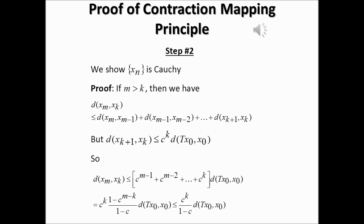Continuing, the distance between the n-th term and the k-th term of the sequence is less than or equal to c to the power n minus 1, plus c to the power n minus 2, continuing down to c to the power k, all multiplied by the distance between T(x_0) and x_0.